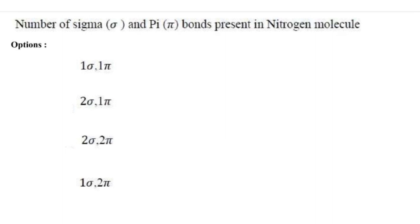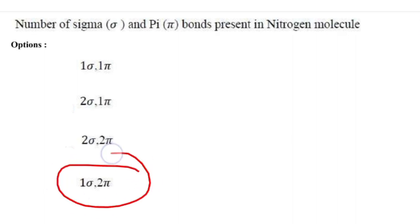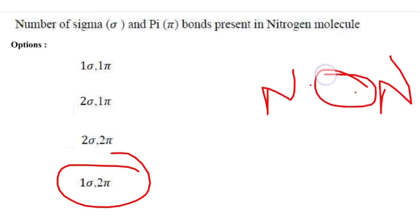The next question: the number of sigma and pi bonds present in a nitrogen molecule. The options were: 1 sigma and 1 pi bond, 2 sigma and 1 pi bond, and 1 sigma and 2 pi bonds. The answer is 1 sigma and 2 pi bonds. Nitrogen molecule shares 6 electrons in bond formation — one is the sigma bond and the other two are pi bonds.